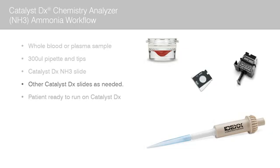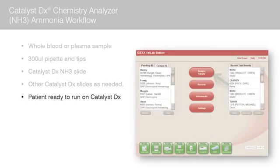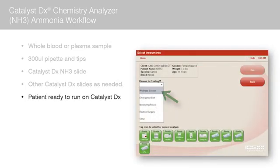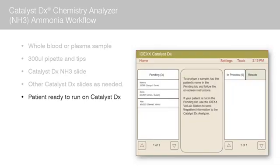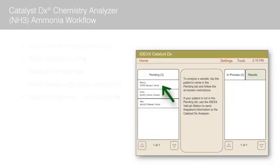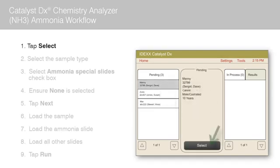For our purposes today, we have already collected the sample and initiated the run on the IVLS. Once the patient's name appears in the pending list on the Catalyst DX home screen, tap the patient name and tap Select.